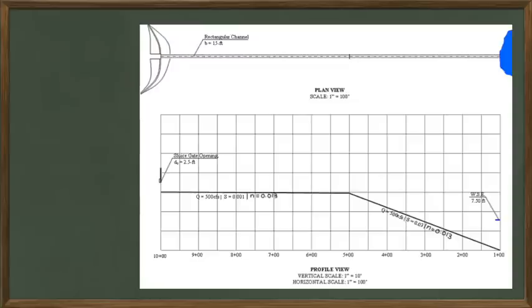This is a single channel with a constant geometry and roughness. The only change in the channel is the slope. Water enters the channel through a sluice gate at the top of the channel. At the bottom of the channel, the water is backed up by water ponding behind a dam.